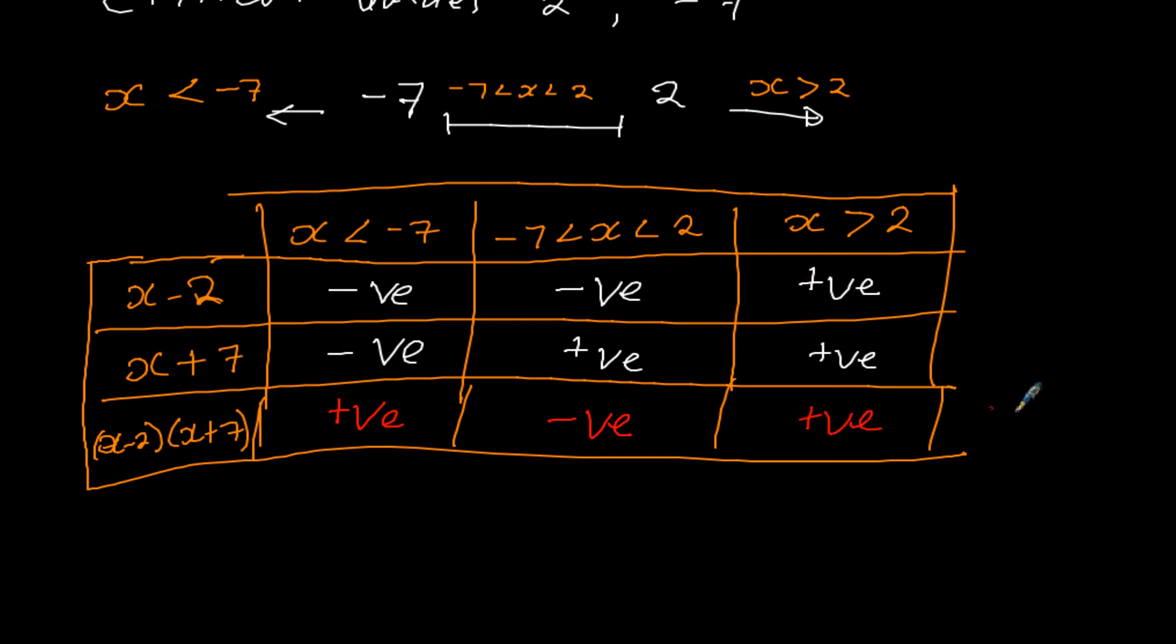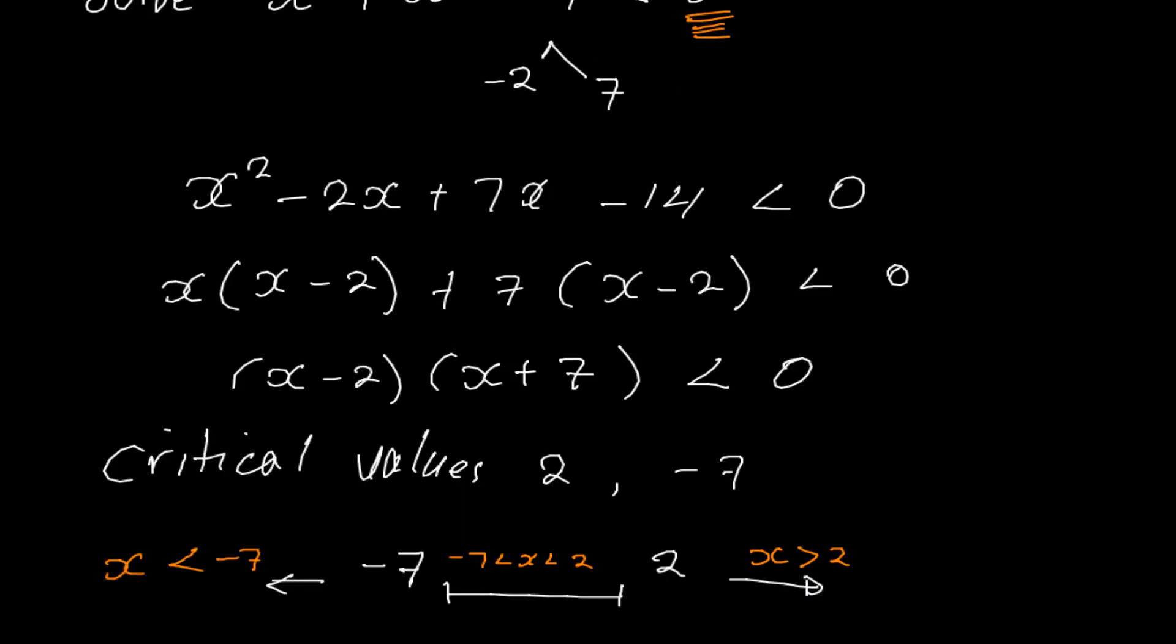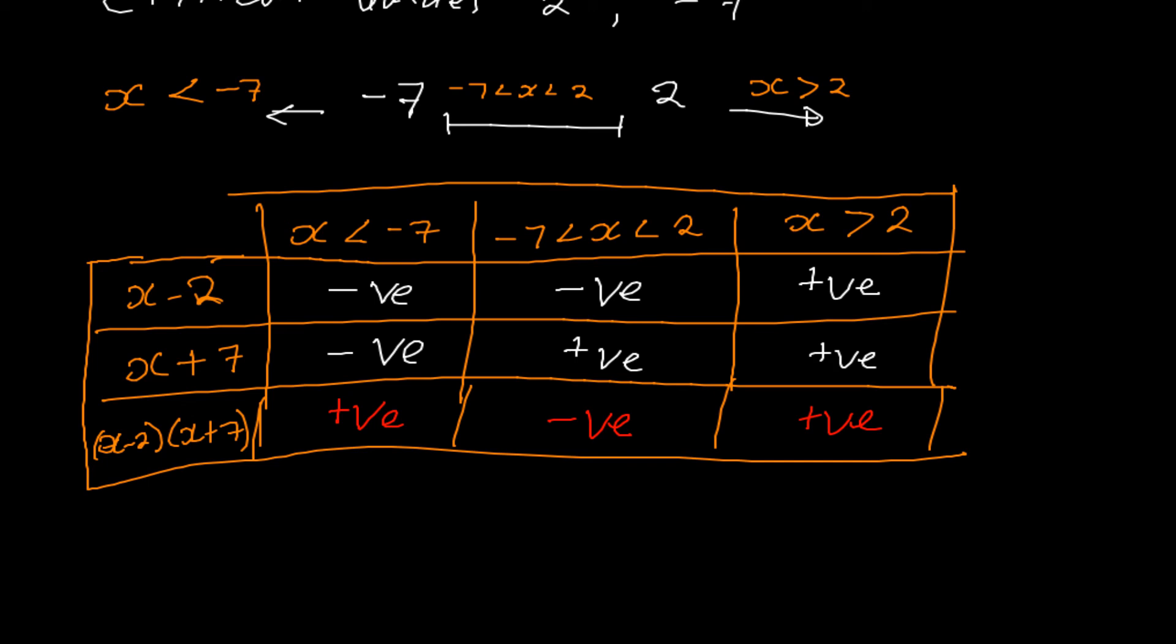But when we go back to our inequality, the question is interested in values which are less than 0. Values which are less than 0 are the negative values. So from this part, this is our answer. Negative 7 is less than x and is less than 2, because it's the one which satisfies the inequality. Thank you.